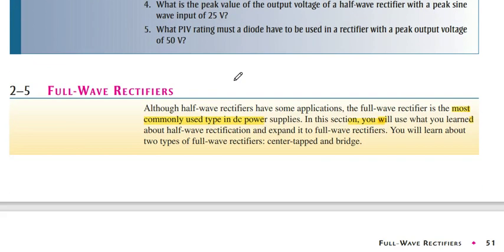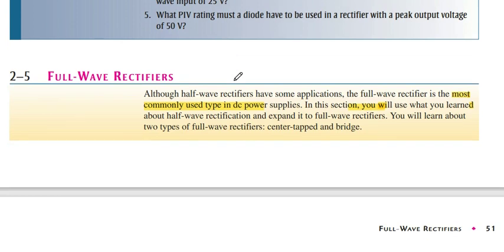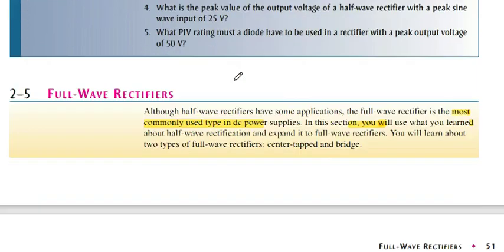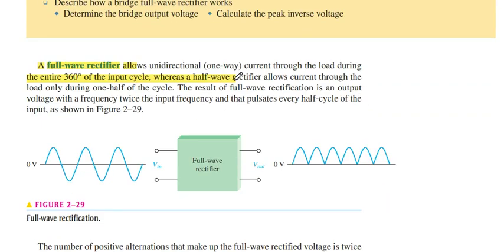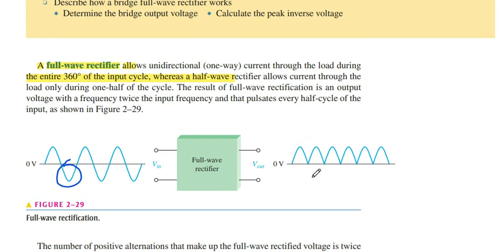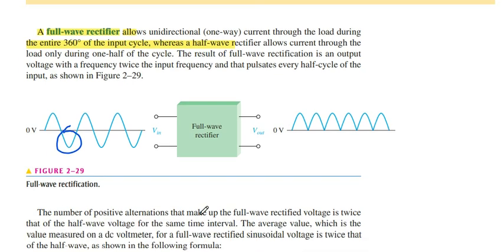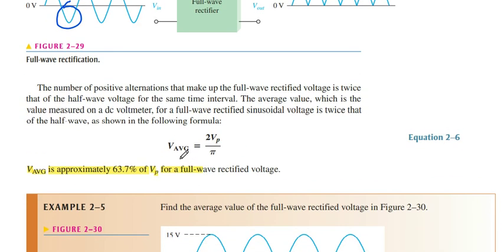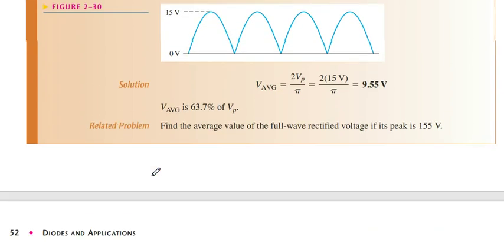Now moving to full wave rectification. Because in half-wave we drop half the cycle, in full wave we also use the negative half cycles and get a complete pulsating DC without any gap. Its average value is 2·Vp divided by pi, and the approximation of output voltage is approximately 63.7 percent — which is doubled compared to half-wave.